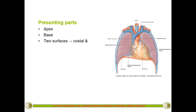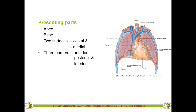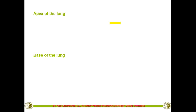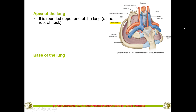The lung has two surfaces. The costal surface is in relation to the costa — the ribs — and is in contact with the chest wall. The medial surface is on the medial side, towards the heart. There are three borders: the anterior border, posterior border, and inferior border. The lung has an apex, a base, two surfaces — costal and medial — and three borders — anterior, posterior, and inferior.